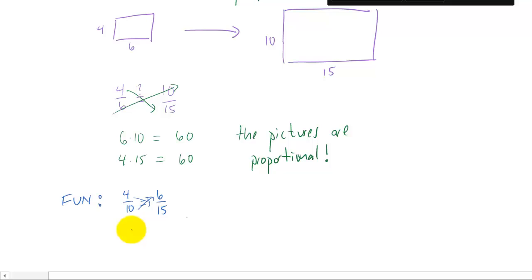You take the two cross-products and you still get 10 times 6 is 60 and 4 times 15 is 60. So there are a couple different ways you can actually set up these ratios to test to see if two things are proportional.